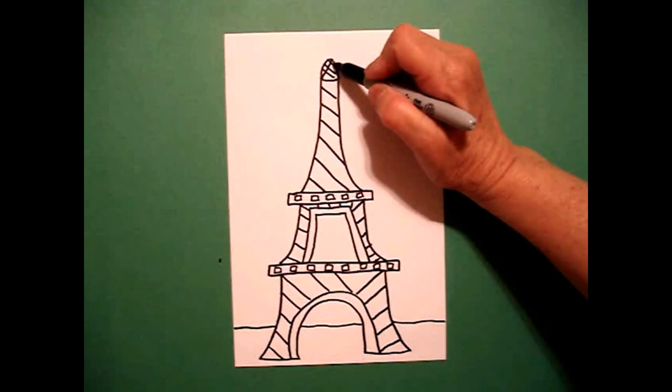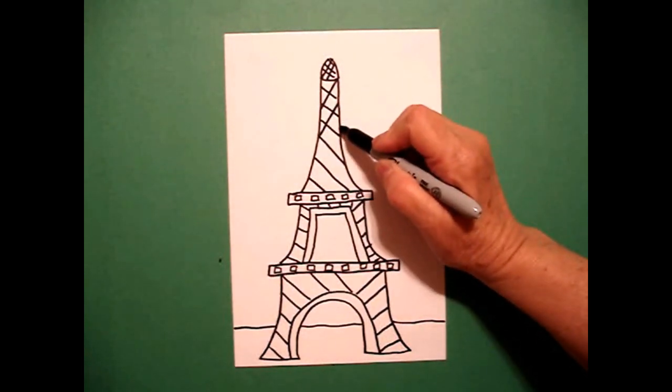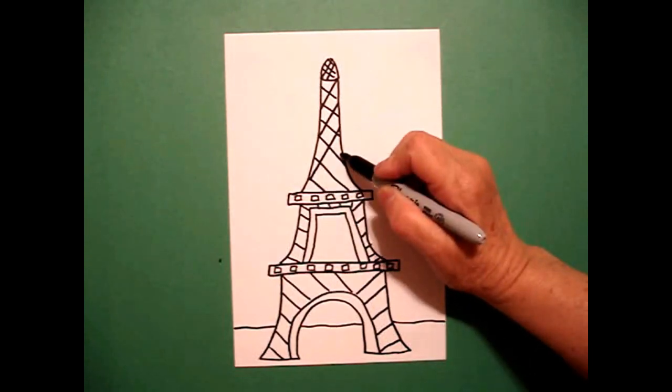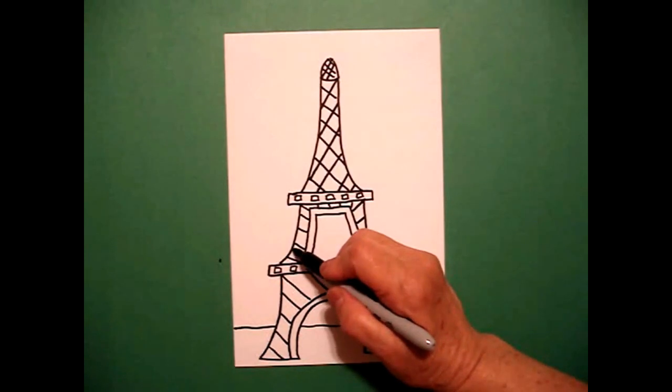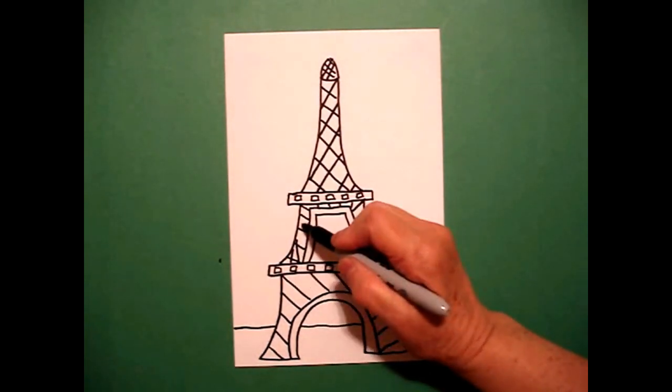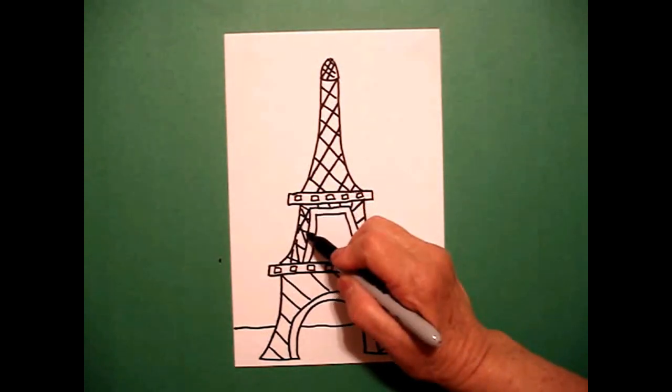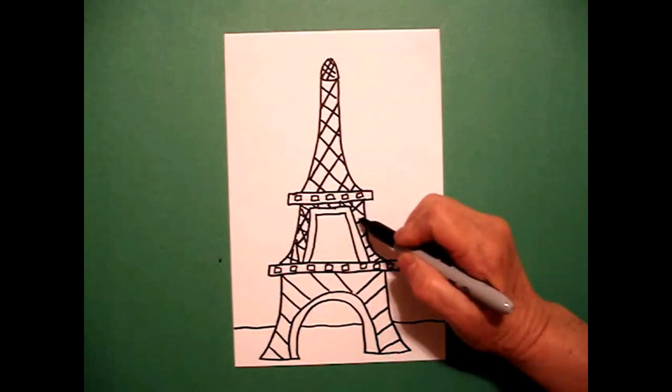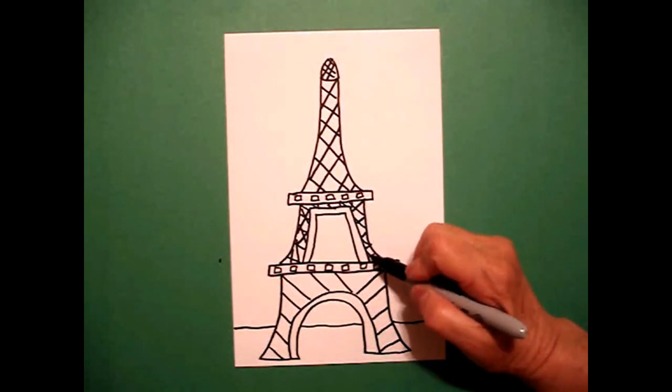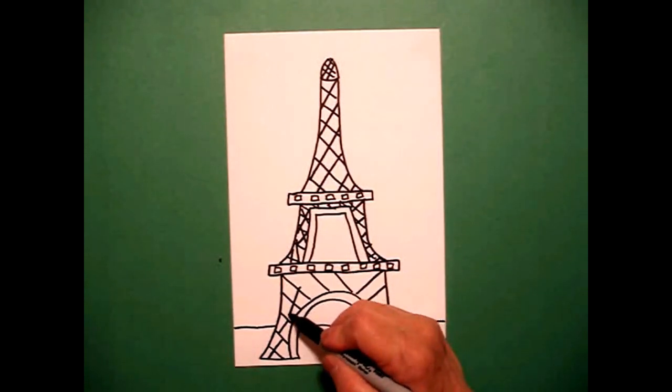You're going to cross each one of those diagonals. Sometimes it works out great and you don't have too many problems. Other times you have to kind of think about where you're going, like on the middle one, because it's kind of little, you want those lines to look like they are crossing, because that's the thing about the Eiffel Tower, it's lattice work.